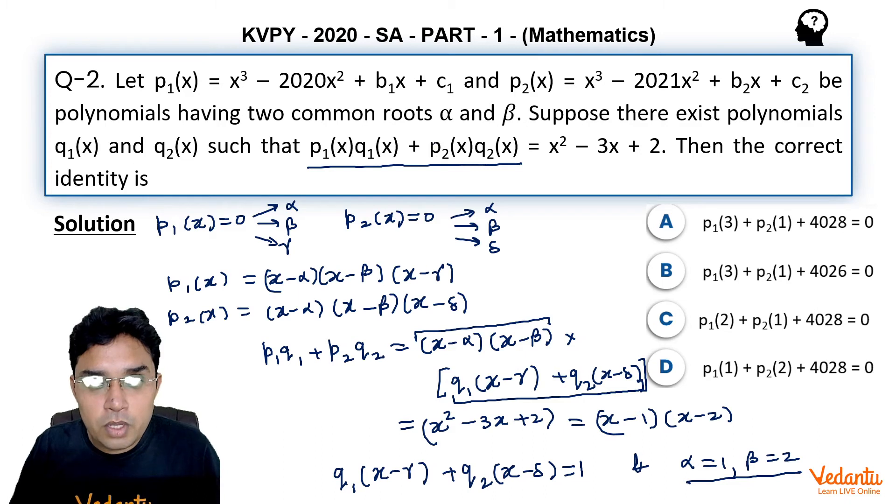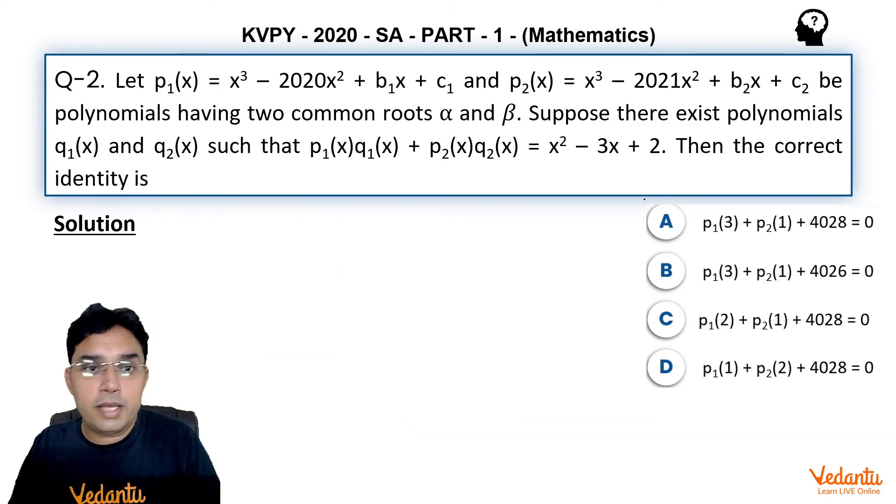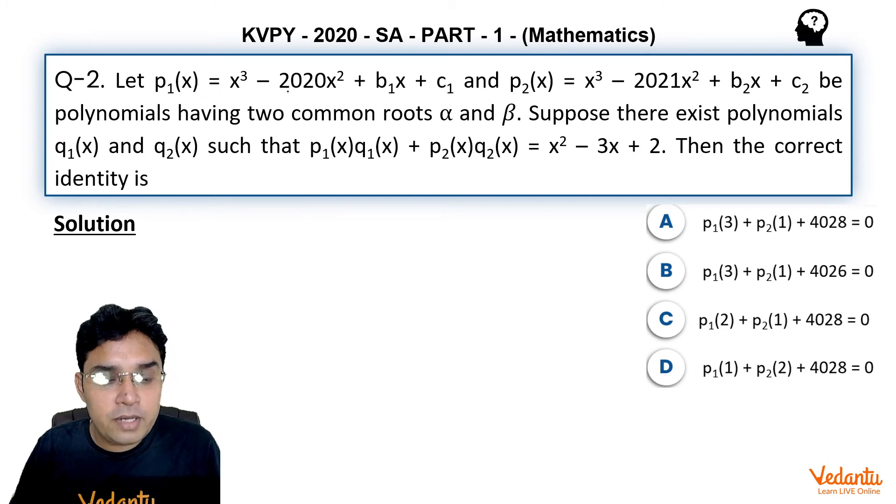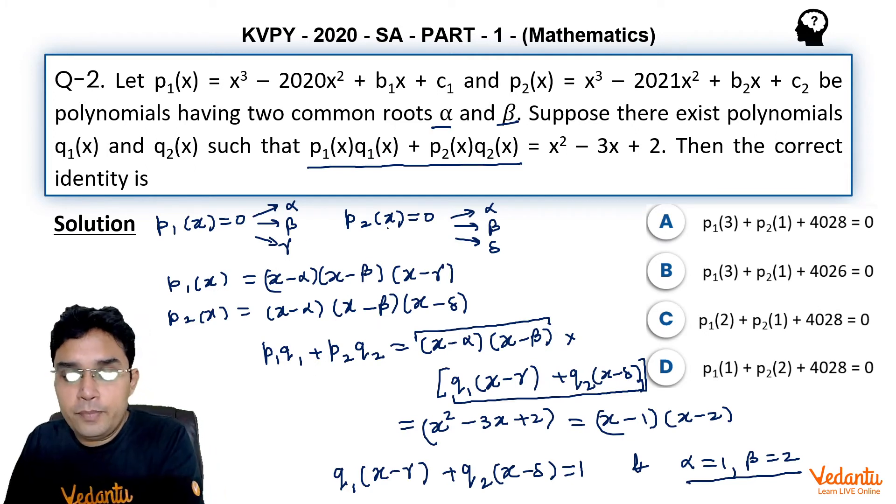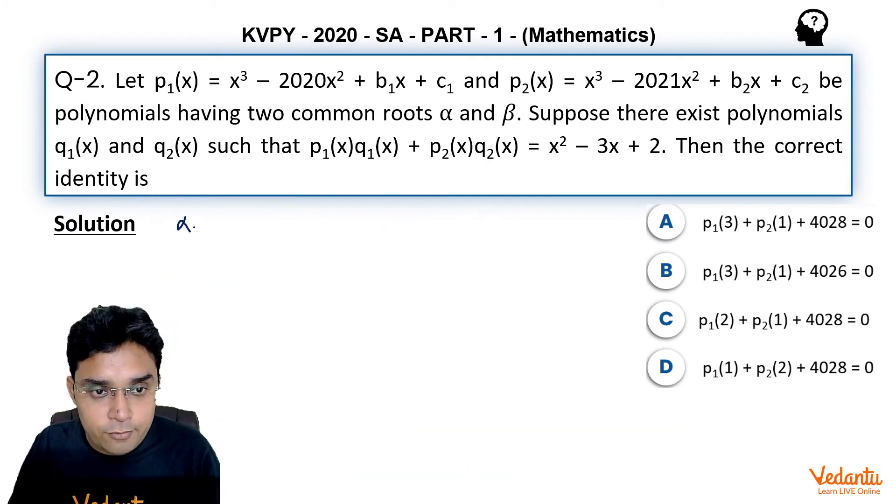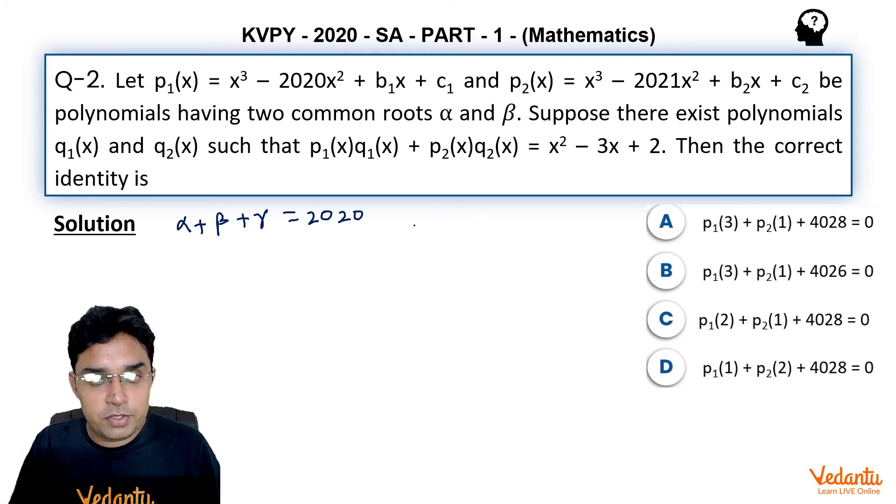Now once we know the common roots are α and β, then we can further do the calculation. Because p₁, if it is having α, β, and γ as roots, their sum of roots α + β + γ should be equal to 2020 by sum of roots formula. α and β are 1 and 2 respectively, hence my γ will be equal to 2017.